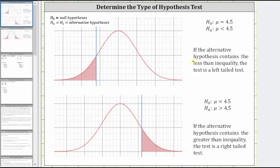If the alternative hypothesis contains the less than inequality, the test is a left-tailed test. Notice here we have mu is less than 4.5. This should make sense because if mu is less than 4.5,